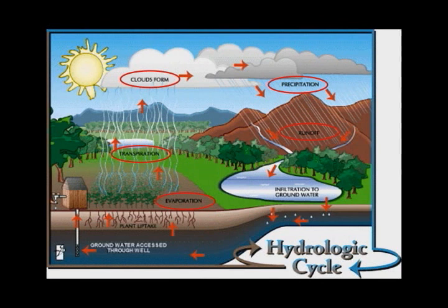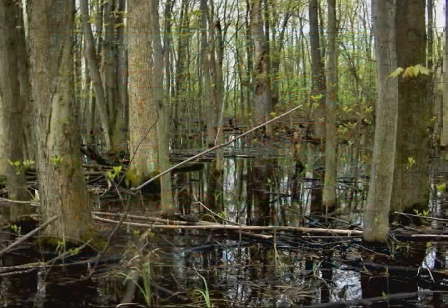The five processes are condensation, precipitation, infiltration, runoff, and evapotranspiration. These occur simultaneously and, except for precipitation, continuously. Stormwater and runoff are part of this natural hydrologic process.